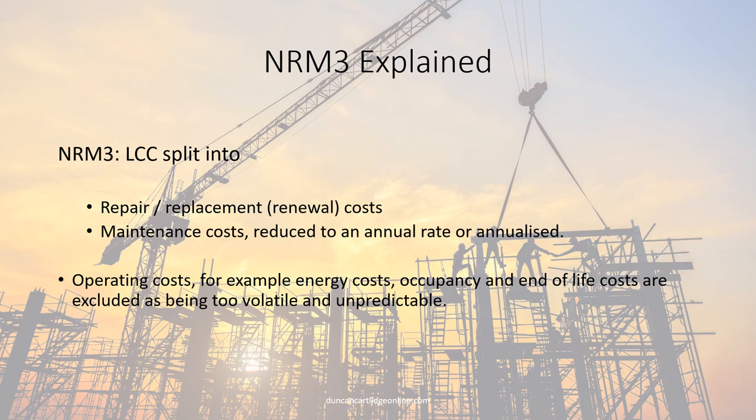NRM3 splits life cycle costs into repairs, replacements or renewals, and annualized or reduced to an annual rate maintenance costs. Operating costs are always excluded as they are too unpredictable.